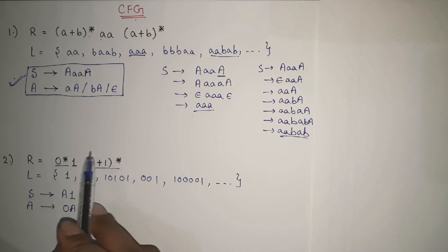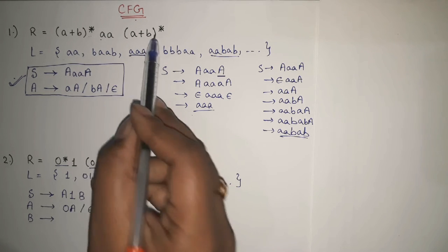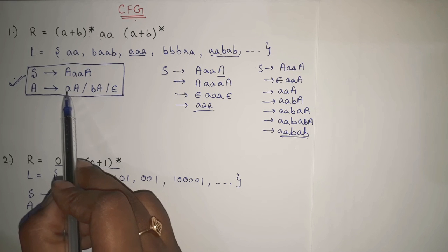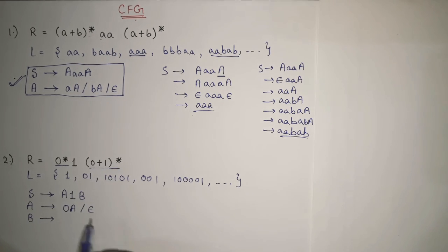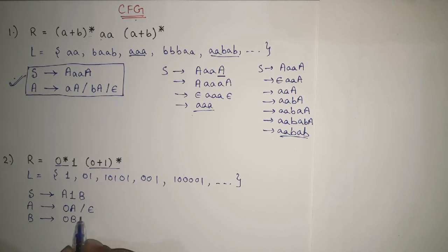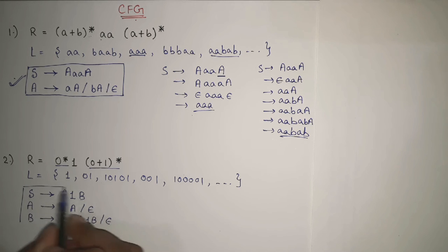Now writing the production for B. It is the same pattern as before — B represents (0+1)*, which is similar to (a+b)*. So B → 0B | 1B | ε. This is our required grammar: S → A 1 B, A → 0A | ε, B → 0B | 1B | ε.